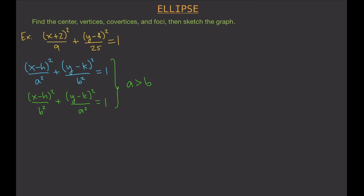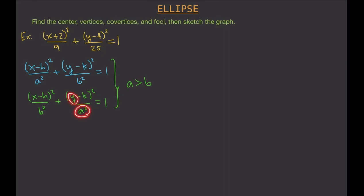The difference between these two equations lies in where a is located. If a is under the denominator of the x term, the ellipse is horizontally oriented — the major axis is along the x-axis. If a is under y, then you have a vertically oriented ellipse. These are the two orientations, and it depends on where a is — a being the greater number.